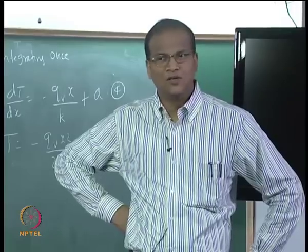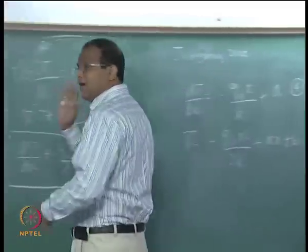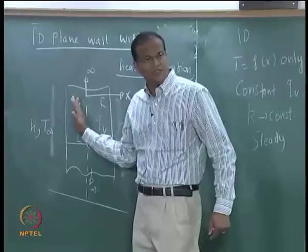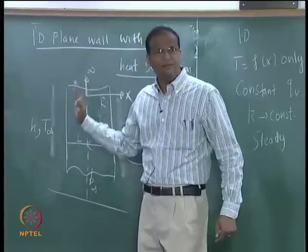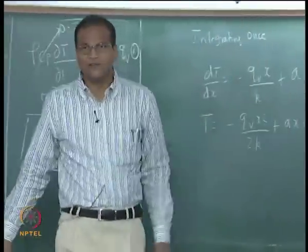Why I took the x equal to 0 at the center? Do you expect a symmetric temperature distribution about the center? If you have a symmetric temperature distribution around the center, dT by dx at x equal to 0 has to be 0.